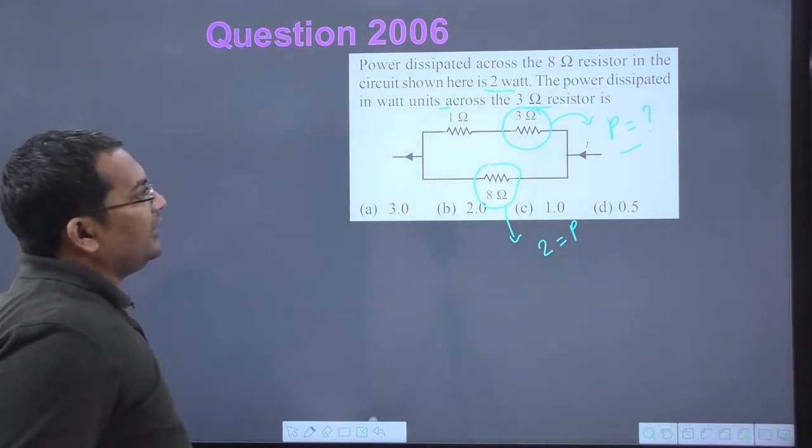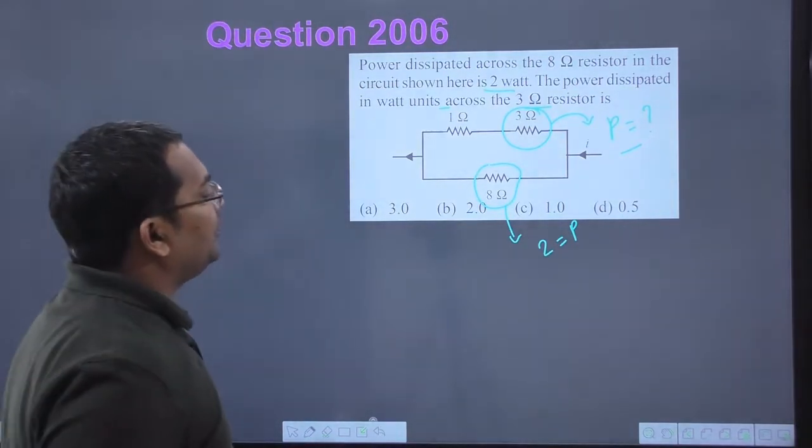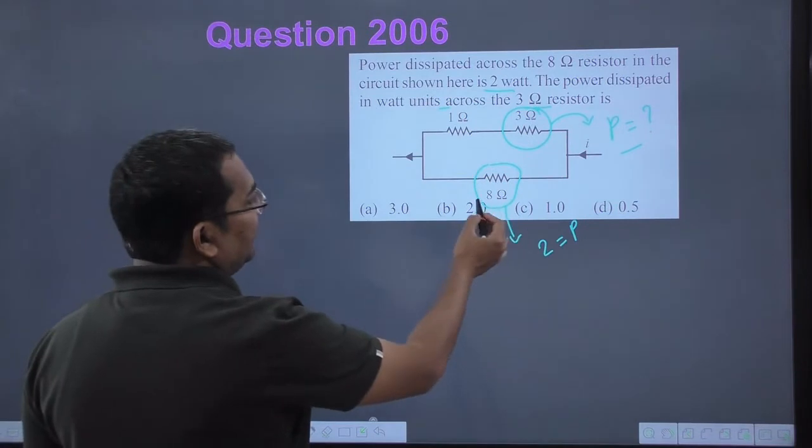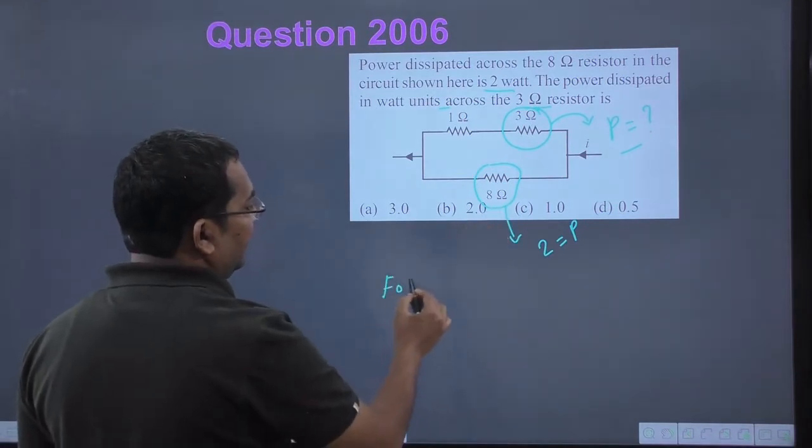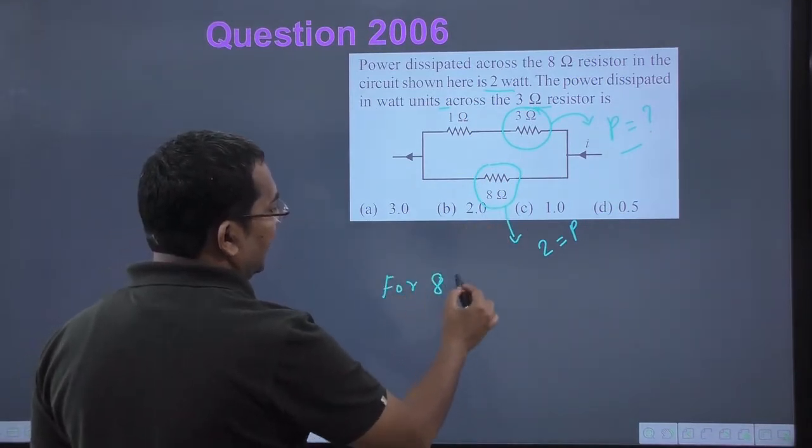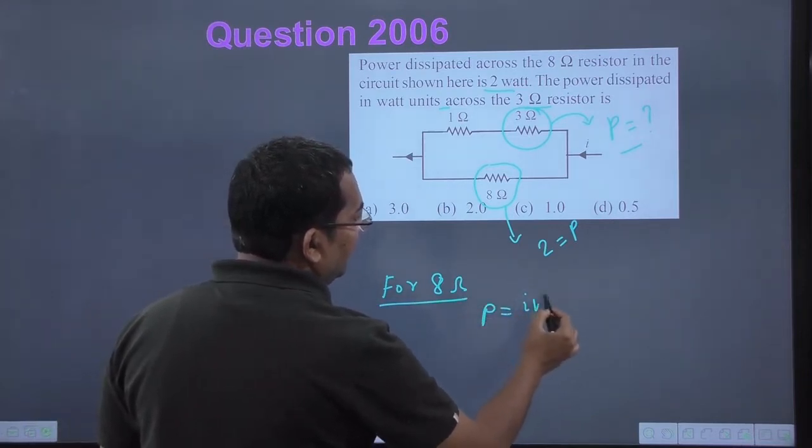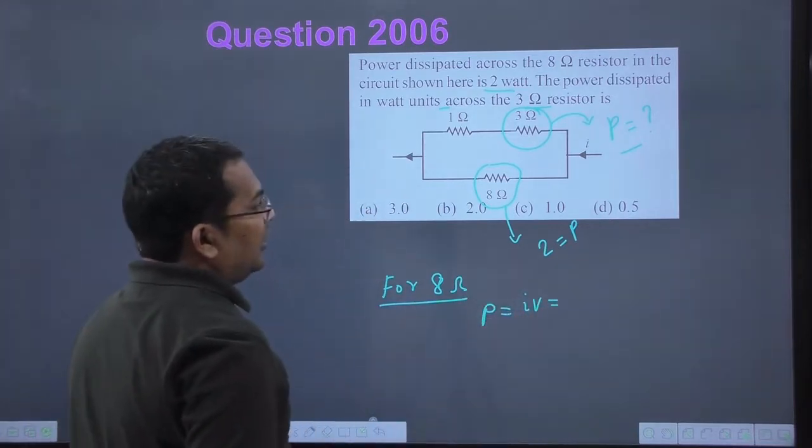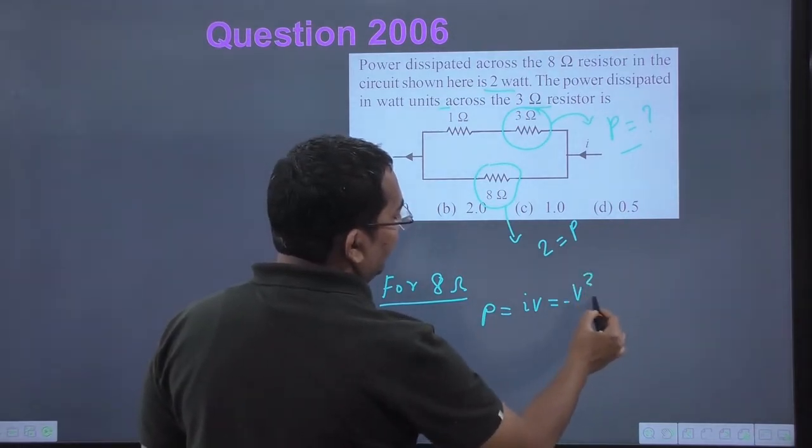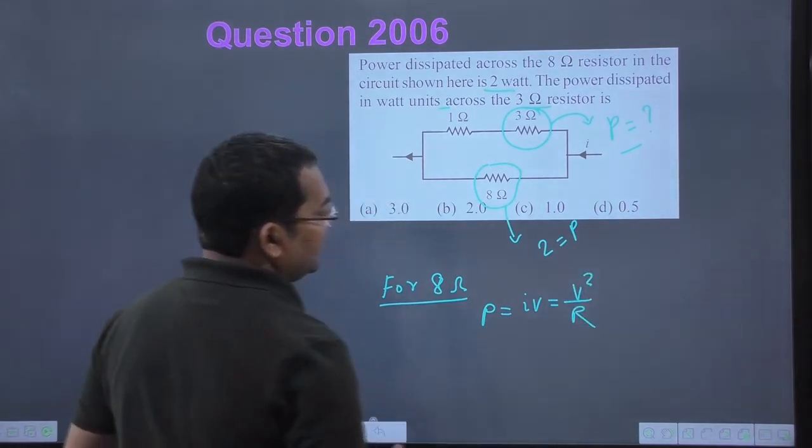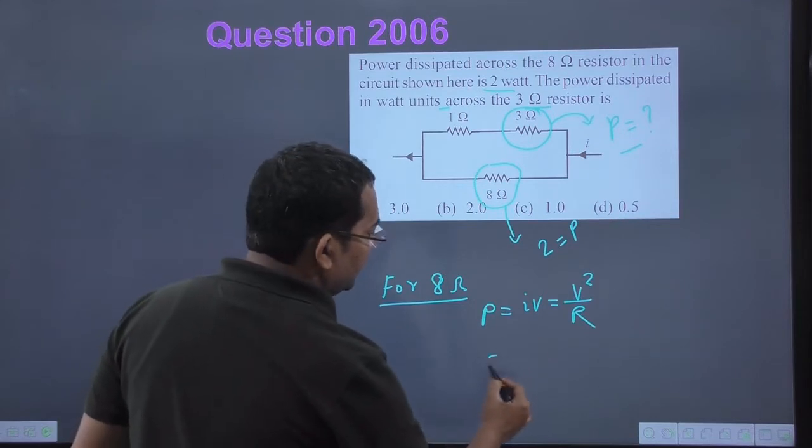If I look at this circuit, for the 8 ohm resistor, if we calculate the power, power is equal to V squared over R. Here power is given as 2 watts.